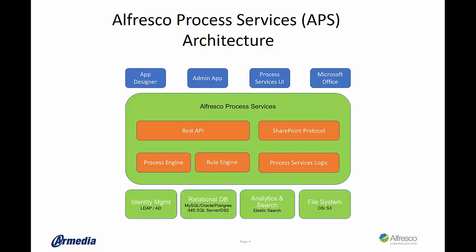On the lower tier, the data tier, Process Services can integrate with any LDAP-compliant directory for identity management, supports storing its process data and context in any major relational database, provides analytics leveraging Elasticsearch, and finally can store the files routed through its workflow in AWS S3, Google Drive, Box, Native File Systems, and Alfresco.